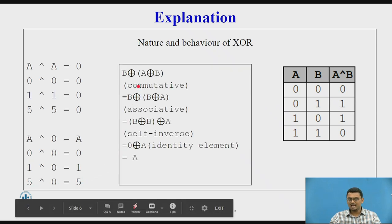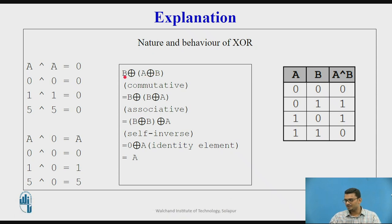For example, I have three inputs as we took in the last example: B XOR A XOR B. We should remember that XOR operation also follows commutative and associative property. By the commutative property, it can be written as B XOR (B XOR A).